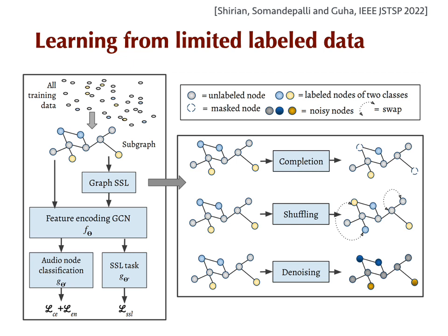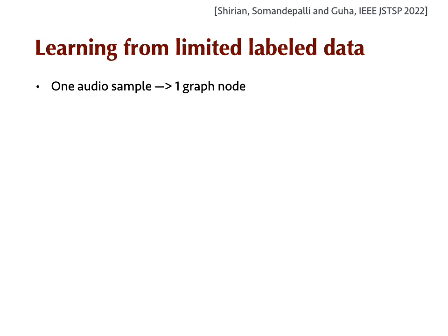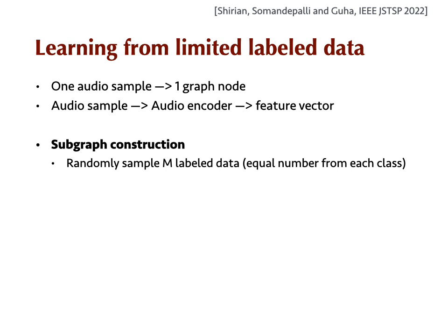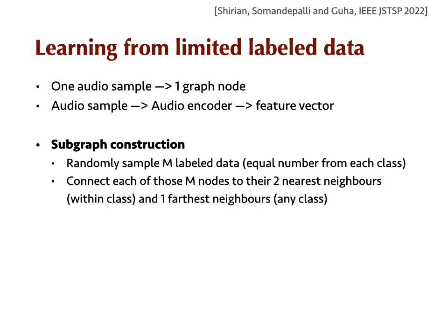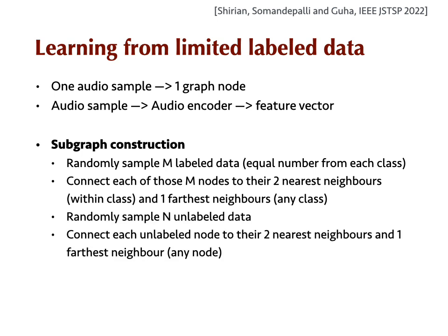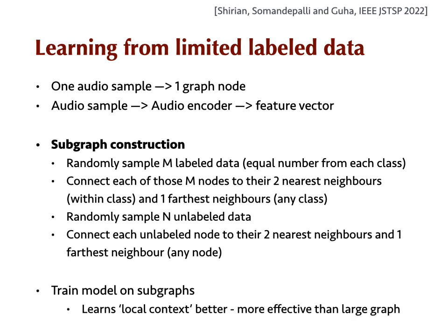Among the SSL tasks that we consider, out of these three, completion and denoising are the two tasks that we proposed. Each audio sample is a graph node, and to represent this audio sample, we use some kind of feature vector or embedding. This could be anything — it could be low-level descriptors or some other embedding like wave2vec. The details of subgraph construction are quite important, and we encourage the reader to refer to the original paper for this part.